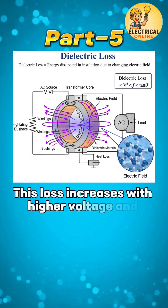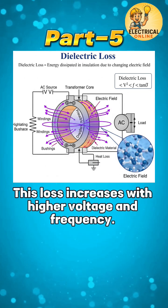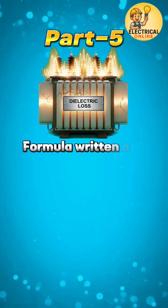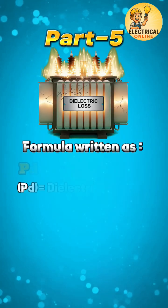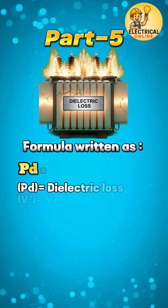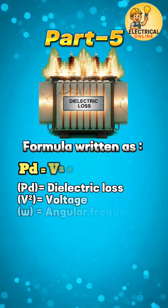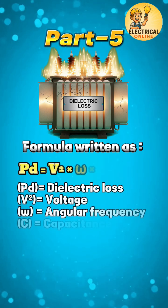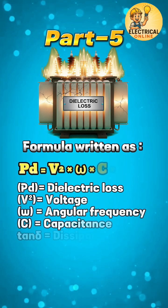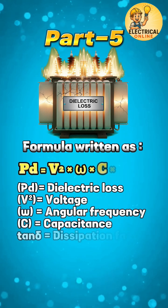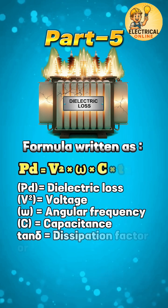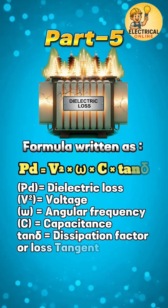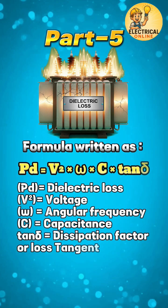This loss increases with higher voltage and frequency. The formula is written as: Dielectric loss P equals voltage V squared, multiplied by angular frequency omega, times capacitance C, multiplied by the dissipation factor or loss tangent, tan delta.